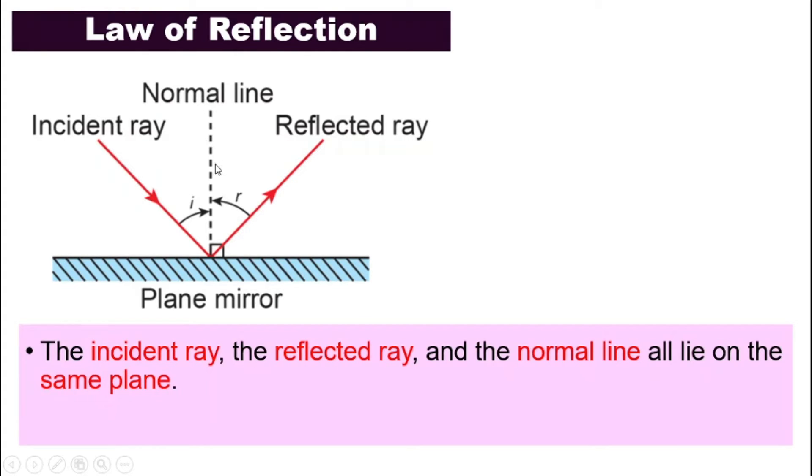The normal line is a line that has 90, that is at 90 degrees from the plane, from the mirror. So say the mirror is this way, we can measure 90 degrees, make a line, that will be our normal line. So the first thing that law of reflection tell us is that incident ray, reflected ray and normal line, they all lie on the same plane.